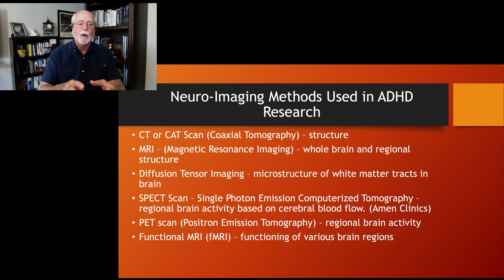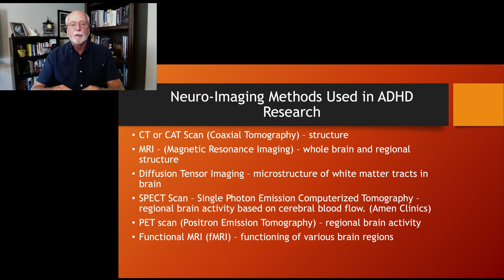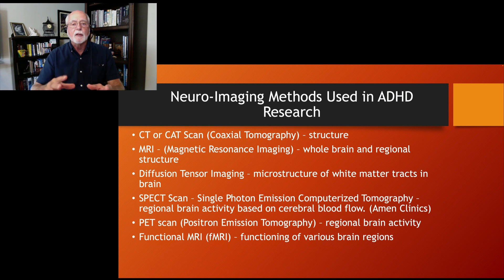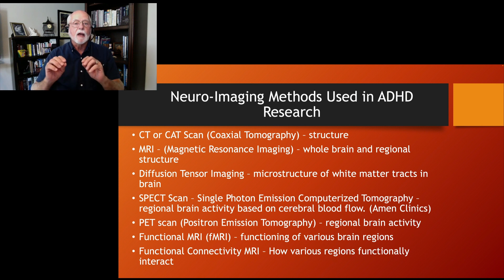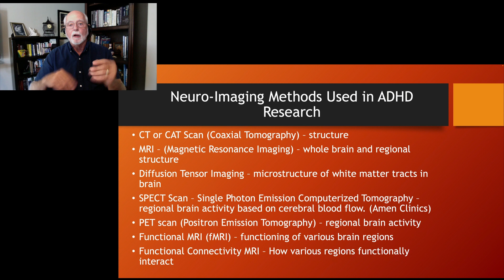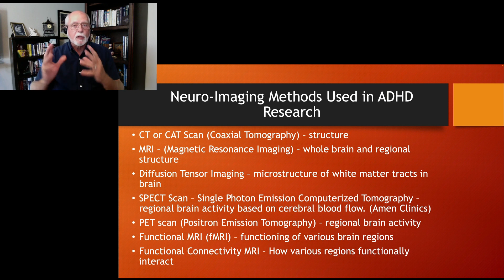Then we have another functional measure — taking the MRI and reanalyzing the data to look at function. The individual in the scanner is in a resting state and then asked to do a task, and they compare the two states to see what parts of the brain are activating in response to that challenge. Finally, there is functional connectivity fMRI, which looks at how different brain regions activate when others are activating — are they connected, related, or inhibitory? It's really looking at the connectivity of the brain as it performs a task.